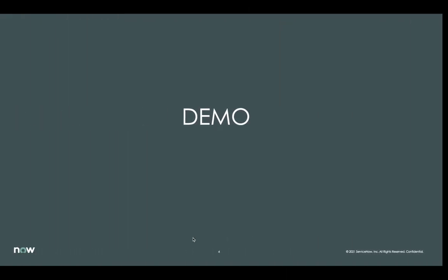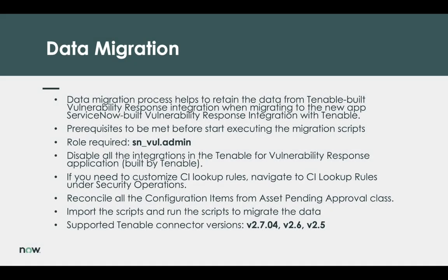Let me proceed with the second approach. The data migration approach helps to retain the data. To migrate the data using data migration, the following prerequisites should be met: the user should have the SNVL admin role, all Tenable built VR integrations should be disabled. If you need to customize any CI lookup rules, navigate to CI Lookup Rules under Security Operations. The configuration items in the vulnerable items should not be associated to the asset pending approval class — these CIs should be reconciled.